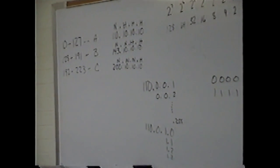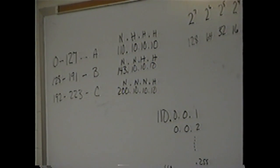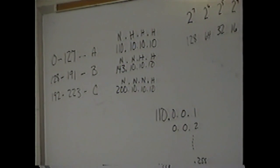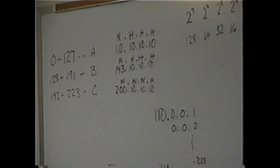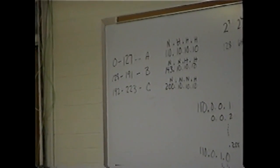The reason that's important is when we start subnetting, you borrow bits from the host. If I am a Class C, I have only eight sets of bits that I can borrow from to get extra subnets. If I'm a Class B, I have two sets I can borrow from. If I'm a Class A, I have three sets I can borrow from.